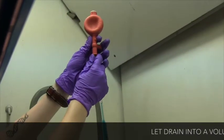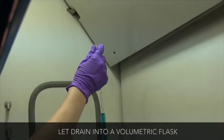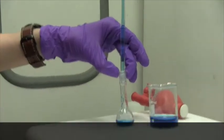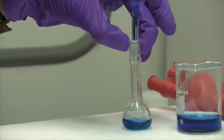Now remove the pipette bulb and allow the pipette to drain into its container. Place the tip of the pipette against the inner surface of the container to facilitate draining.